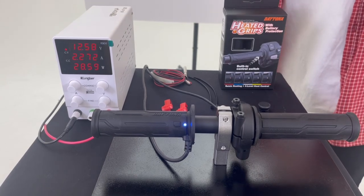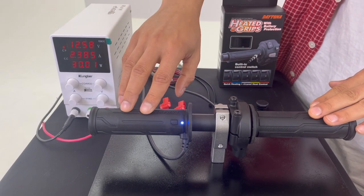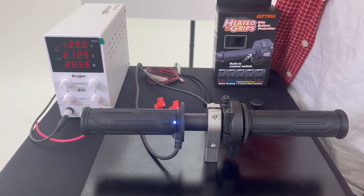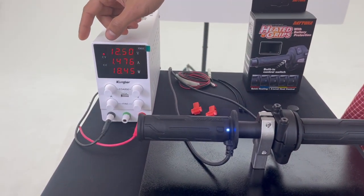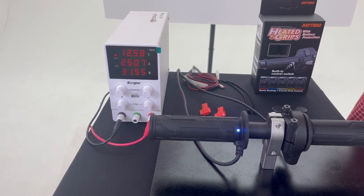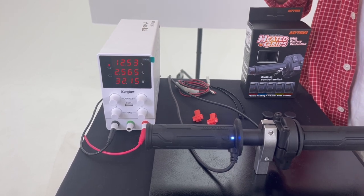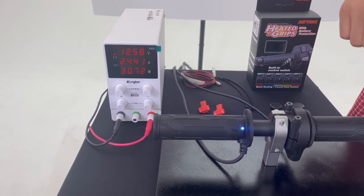And these grips are for 22.2 millimeter handlebars. Also, the most important feature of this product is the battery protection. As you can see right now, our battery is around 12.5 volts, and if your battery goes below 12 volts they will turn themselves off automatically. Let's try that.